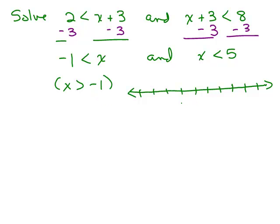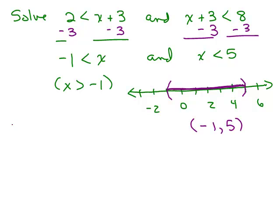You want numbers bigger than negative 1 and at the same time less than 5. Here's 0, negative 2, 2, 4, and 6. Bigger than negative 1 means to the right of negative 1 and it goes up to 5. Our solution here would be written as between negative 1 and 5. Remember, that's not an ordered pair — this is the answer in interval notation.